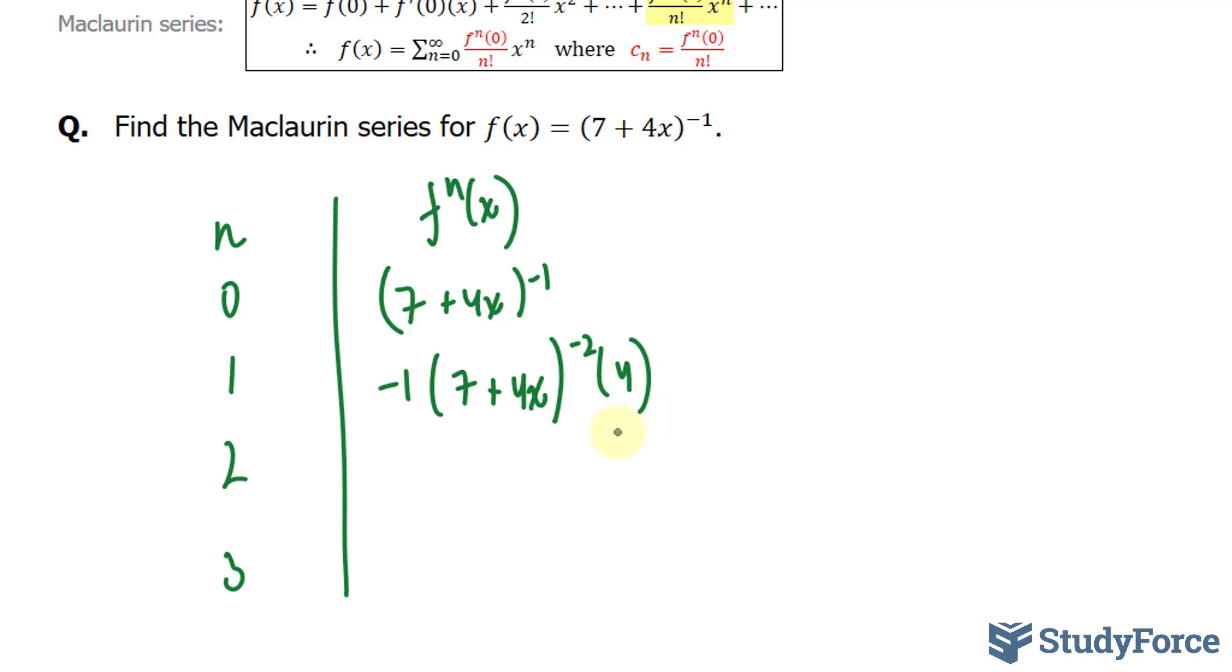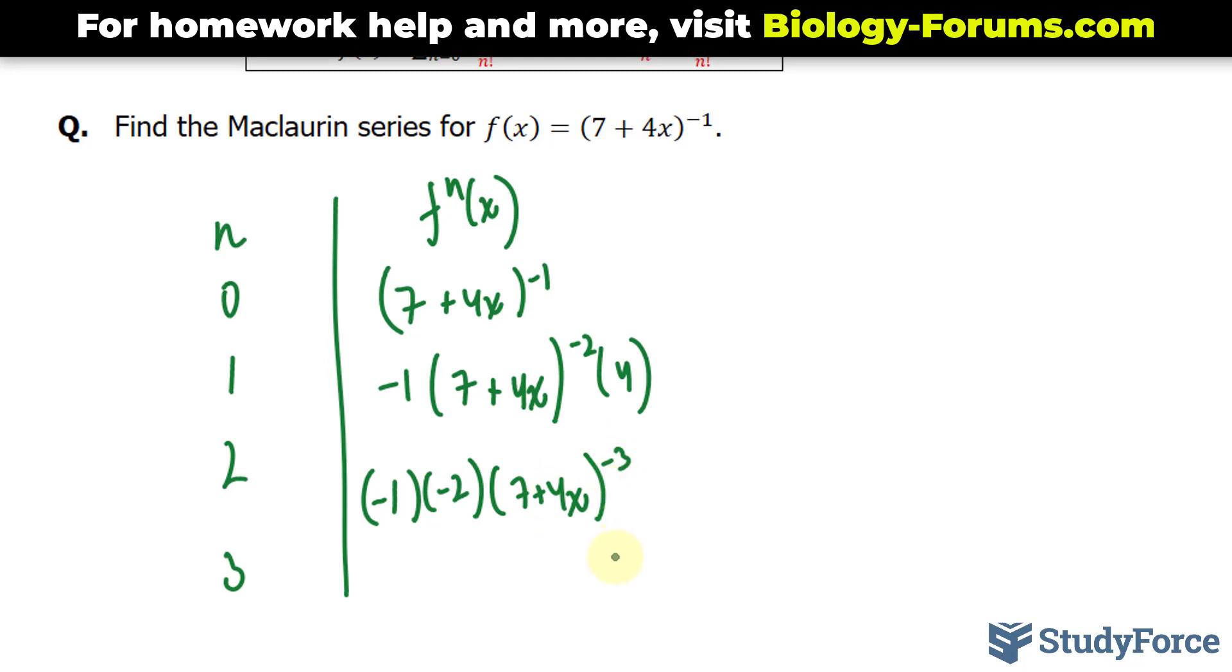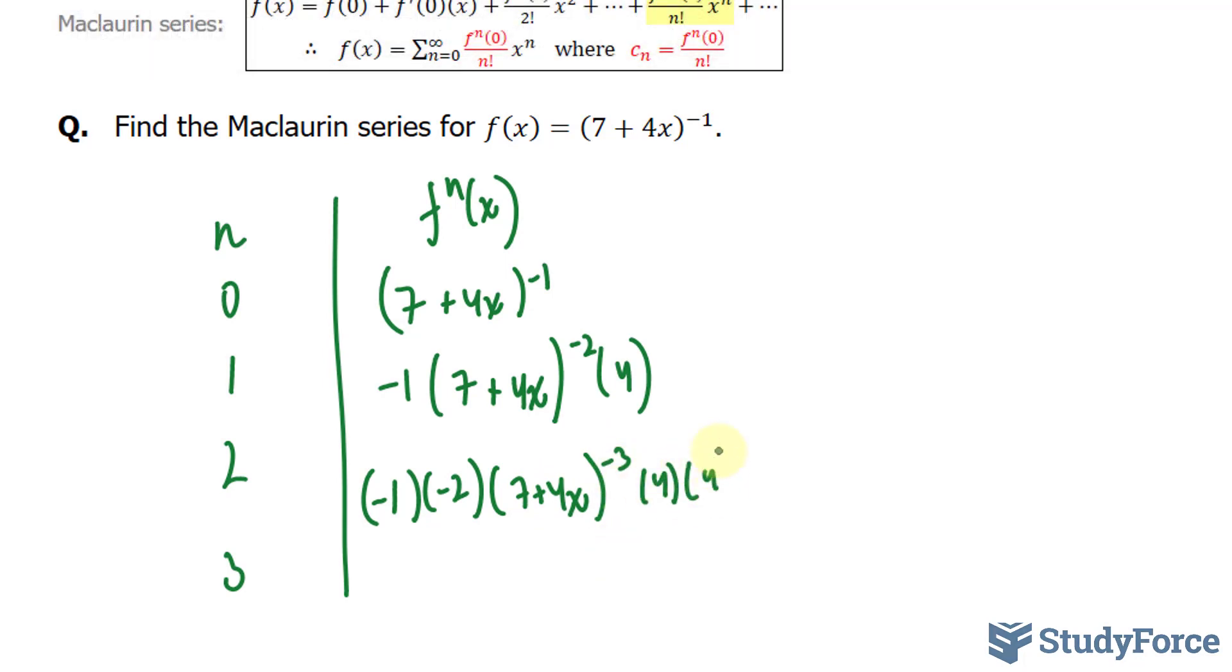The second derivative, substituting n into here, will give us negative 1 times negative 2, 7 plus 4x raised to the power of negative 3, 4 times 4.